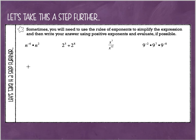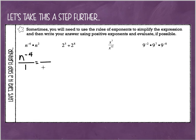Here are some more examples where we take this a step further. Let's think about the rules of exponents from our previous lessons. If I have a multiplication problem, I keep the base and add the exponents — negative 6 plus 2 is negative 4. I don't want a negative exponent, so I'm going to put it over 1. To turn the exponent into a positive, I move it from the numerator down to the denominator, and put a 1 as a placeholder in my numerator. This expression simplifies to 1 over n to the positive 4.